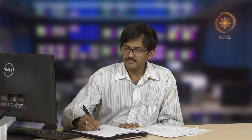Similarly, B is a proper subset of C. But if we consider A and B — A is {1, 2, 3} and B is {3, 4} — then A is not a subset of B and B is not a subset of A.